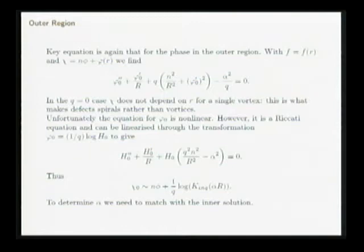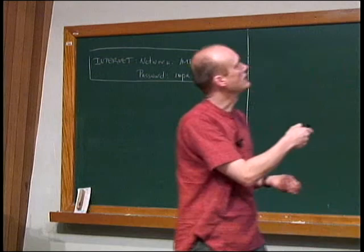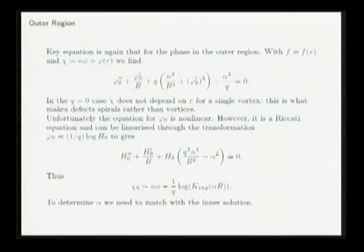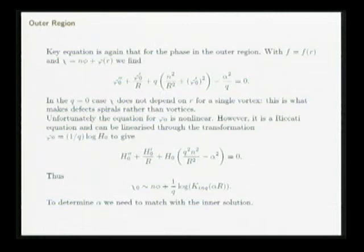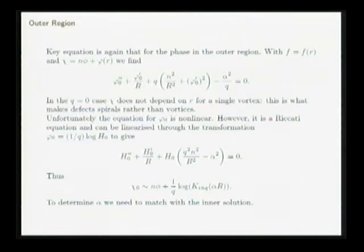The key equation is the equation for the phase in the outer region, exactly as for the vortex, but this time I've got a steady spiral with just one spiral, giving an equation for the phase in the outer region due to the radial dependence of chi. For a vortex with q zero and alpha zero, phi is just zero. But here I don't get that. This equation is not nice because it's nonlinear — there's a phi prime squared — but it's nonlinear in a nice way: it's a Riccati equation, so I can linearize it through a Cole-Hopf transformation.